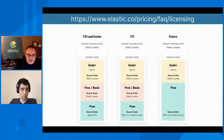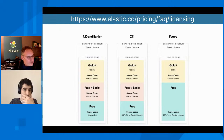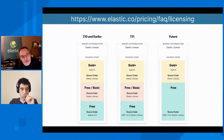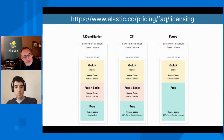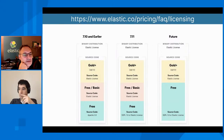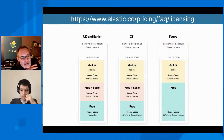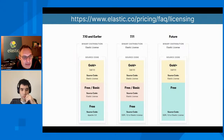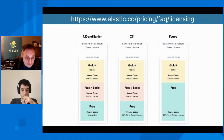Dans les informations nouvelles, vous avez dû entendre parler des changements à venir au niveau des licences. Pour illustrer ce propos, j'ai choisi une photo qui permet d'expliquer ce qui se passe. Aujourd'hui, la situation jusqu'en version 7.10 : pour le code source, il y avait différents types de licences. Les features commerciales en jaune étaient sous licence Elastic. Les options gratuites également. Et une partie du code était sous licence Apache 2. À partir de la version 7.11, la partie sous licence Apache 2 pourra être utilisée soit sous licence Elastic, soit sous licence SSPL version 1.